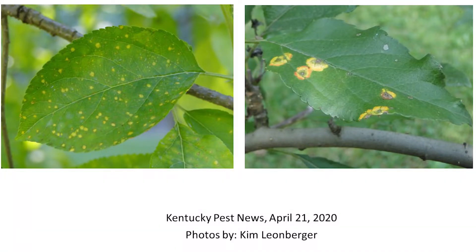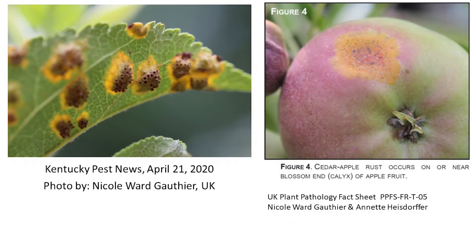Leaf symptoms begin as small pale yellow spots under the upper leaf surface; spots then become enlarged to brightly yellow-orange, often with reddish borders. In late spring or early summer, the small orange tubular fruiting bodies project from the lower sides of the leaves. Severely infected leaves may drop prematurely. Infected fruit can exhibit similar symptoms as leaves, with spots being much larger, and the fruits may also become deformed and drop prematurely.